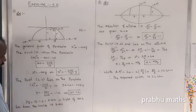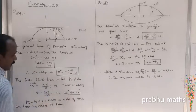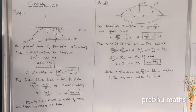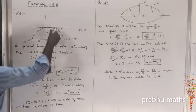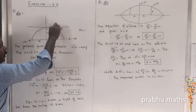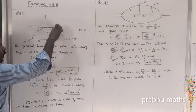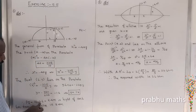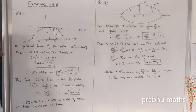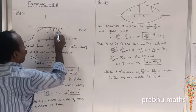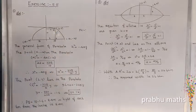So y is equal to minus 1.60. The distance PQ from the point gives: total height is 10. So 10 minus 1.6 equals 8.4 meters. The height of the arch 6 meters from the center is 8.4 meters.